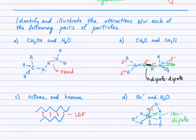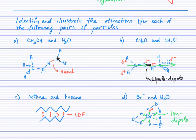Methanol and water: methanol is tetrahedral at the carbon and bent at the oxygen; the water molecule is also bent. The hydrogen directly bonded to the oxygen in the hydroxyl group of this alcohol is susceptible to a hydrogen bond strength attraction from the lone pair of electrons on the electronegative oxygen in water. So we have a hydrogen bond formed between methanol and water.